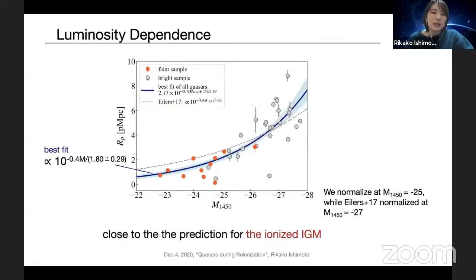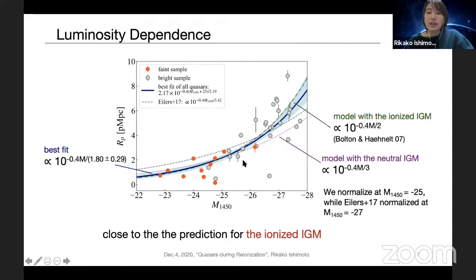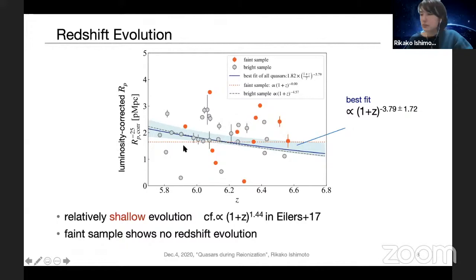Next, we investigated the luminosity dependence of our sample. The red and gray dots indicate the faint and bright sample respectively. And the power law fit to our sample shows this relation shown in blue line. And this relation is close to the prediction with the ionized IGM shown in green line. So this implies that the surrounding IGM is mostly ionized at the epoch. In order to examine the redshift evolution, we used this best fit relation to correct the proximity zone sizes by luminosity. So hereafter, I showed the proximity zone sizes corrected by luminosity.